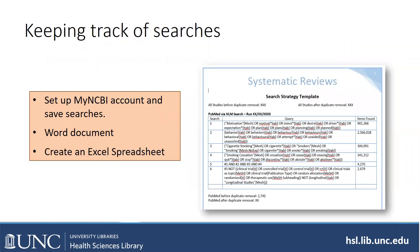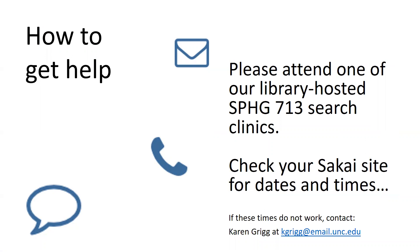You want to keep track of your searches — you can set up a My NCBI account in PubMed to save them, or create a Word document or Excel spreadsheet. I use a search strategy template for systematic reviews to keep track of terms. If you need help, please attend one of our library-hosted SBHG 713 search clinics — we'll have several this semester, posted in Sakai, with multiple librarians on hand to help entire teams. If none of those work for you, contact me at kgreig@email.unc.edu. There are many ways we can get you help. Thank you.